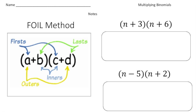To multiply binomials, you're going to learn a famous method called FOIL. FOIL stands for First, Outside, Inside, and Last. This diagram really shows you the order of how to multiply the terms to get the product.